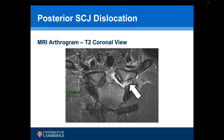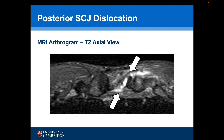This coronal MRI scan shows the torn anterior and posterior ligaments with damage to the costoclavicular ligament. This axial scan shows dye escape both anteriorly and posteriorly, confirming a tear to both the anterior and posterior ligaments.